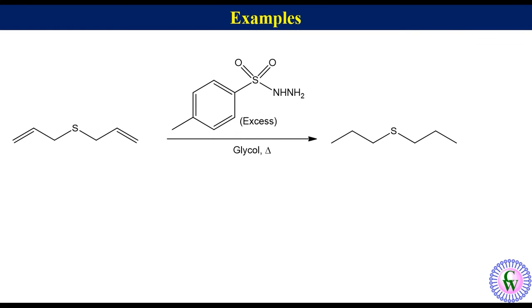Reduction of diallyl sulfide. This compound has a sulfur atom. Hydrogenation in the presence of palladium catalyst is not a suitable method for the reduction of this compound due to catalytic poisoning caused by the sulfur atom. But if we allow it to react with excess tosyl-hydrazide in ethylene glycol under heating conditions, both the double bonds are easily reduced to produce dipropyl sulfide.